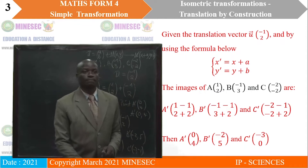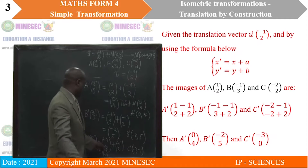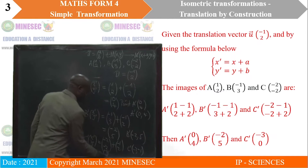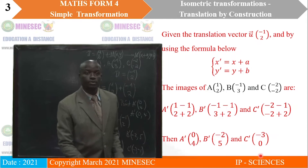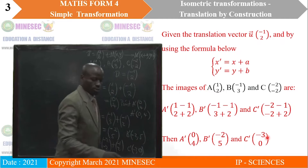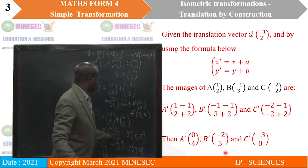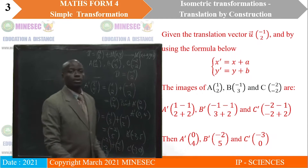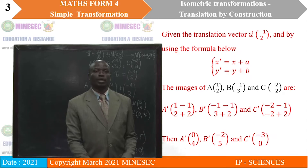So if we look at that, we have C prime as (-3, 0) — since -2 plus 2 is 0. Then for B prime: (-2, 5). And for A prime: (0, 4). You can just take the coordinates of each point, add the translation vector, and you get the images.